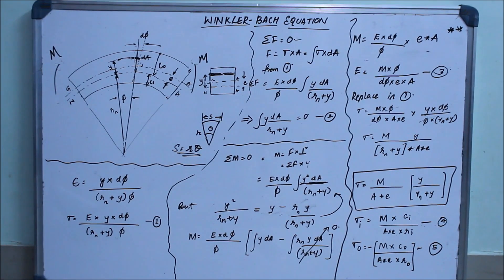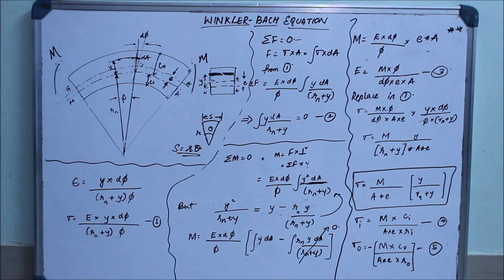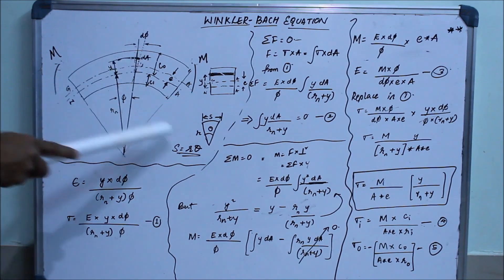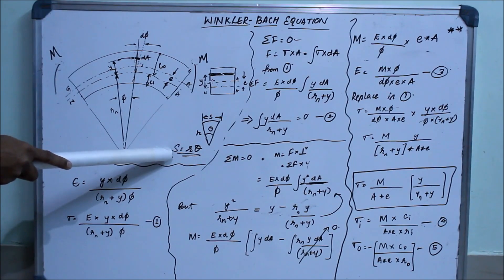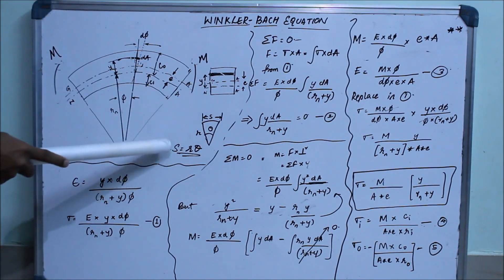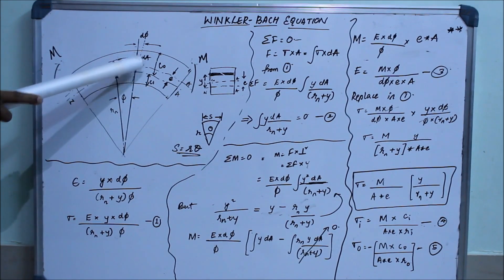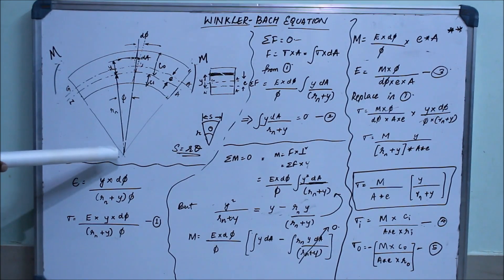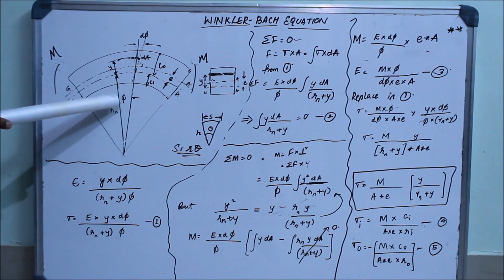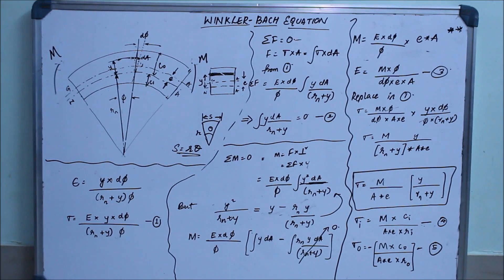Coming to the derivation, we need an expression for bending stress. First we go with strain — the basic definition of strain is change in length divided by original length. The change in length is y·delta phi, and the original length is (rn + y)·phi. So strain equals y·delta phi divided by (rn + y)·phi.